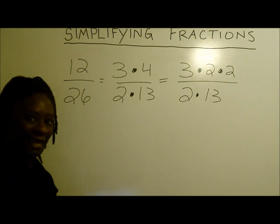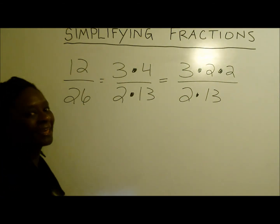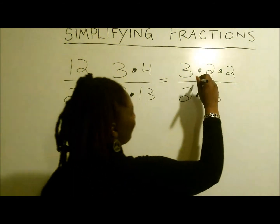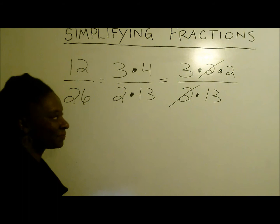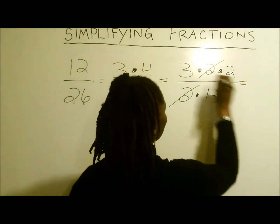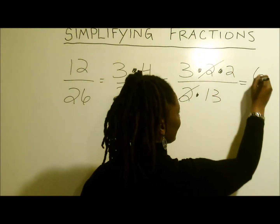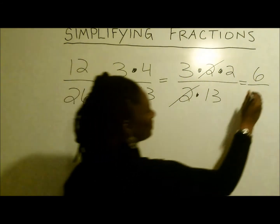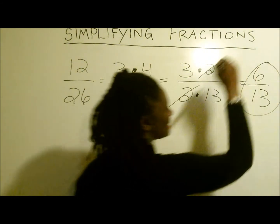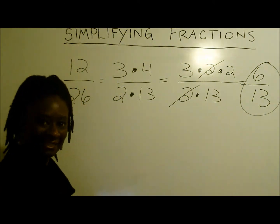Alright, are we ready to eliminate our common factors? Yes. We can get rid of this 2 here and say goodbye to that 2. So now we're left with 3 times 2 is 6. And the 13 stands alone. Great. 6 over 13. Now that's our answer.